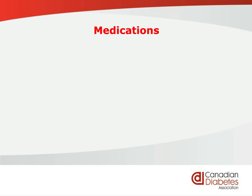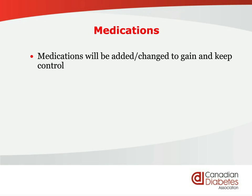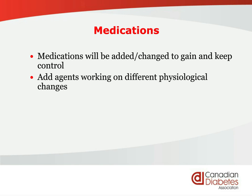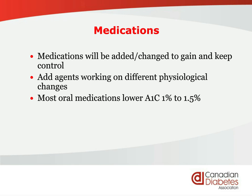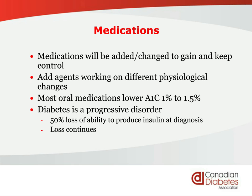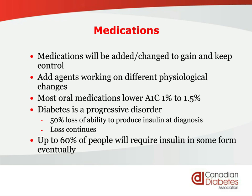Medications are going to change over time — they can be added and changed to gain and keep control. You may end up with four or five medications, or maybe two work for you. It's all individualized, and agents are added that work on different systems in your body. Almost every single oral medication lowers the A1C by about 1 to 1.5%. And because diabetes is a progressive disorder, almost up to 60% of people with type 2 diabetes will eventually require insulin in some form, even if it's just once a day at bedtime.